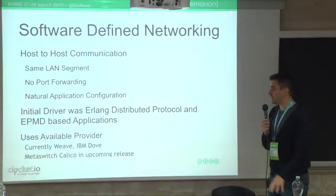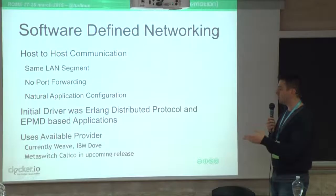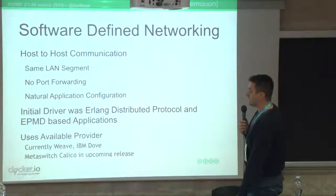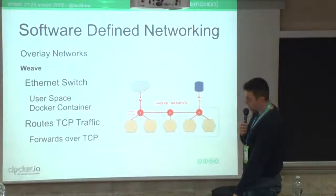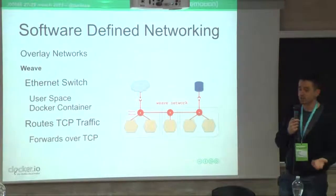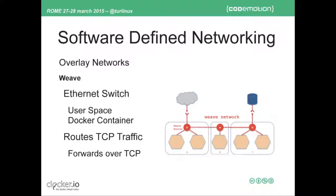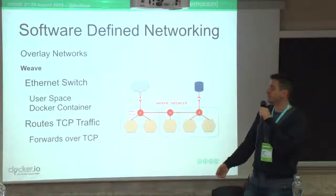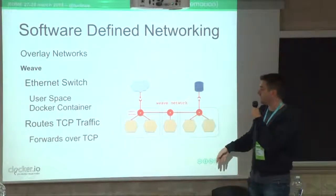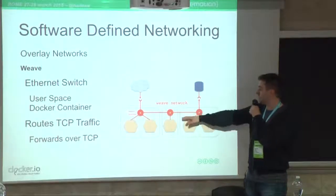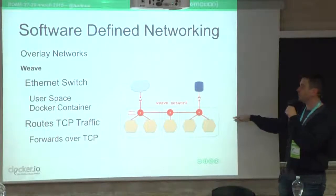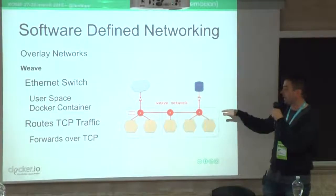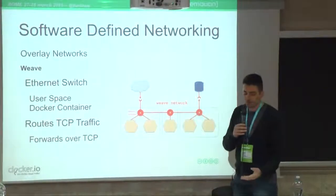Clocker currently uses a couple of different SDN providers. One is called Weave; another implementation is already done for IBM Dove; and we will release a new implementation for MetaSwitch Calico in the upcoming release. In the spirit of a battery-included but removable solution, Clocker is built on Weave, a startup providing SDN for Docker. It runs in user space and is itself a Docker container. The Weave agents are deployed on different Docker hosts and allow seamless communication across hosts.